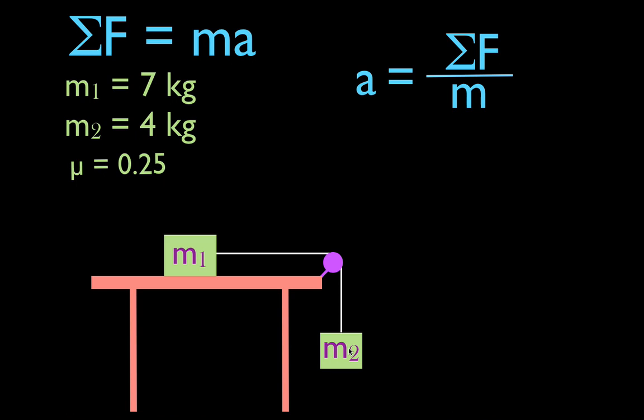The masses are attached by an inelastic string, which means they're going to have the same acceleration. We have this system of M1 and M2, and they're going to accelerate at the same rate. So we're going to apply Newton's second law to this system of objects M1 and M2.